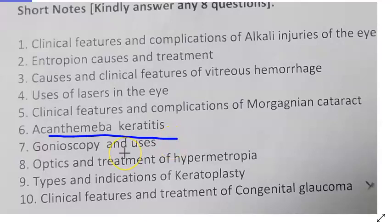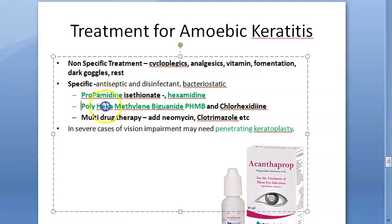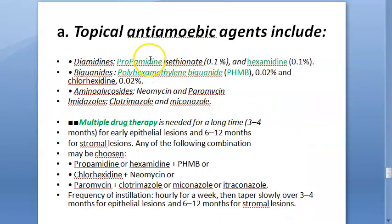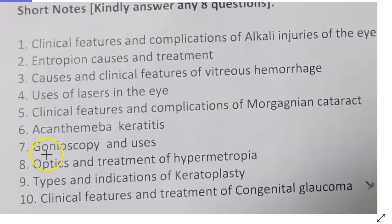Complications of Morgagnian cataract include glaucoma. Next, acanthamoeba keratitis — it's caused by a protozoan, classically in contact lens users but now seen in others too. It's very difficult to diagnose and treat. Specific medications include propamidine, hexamidine, polyhexamethylene biguanide (PHMB), and chlorhexidine — very important.